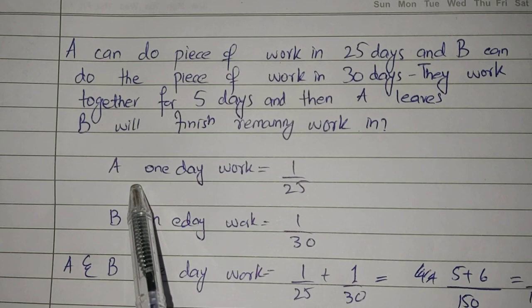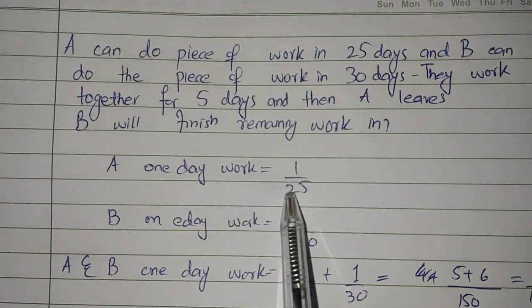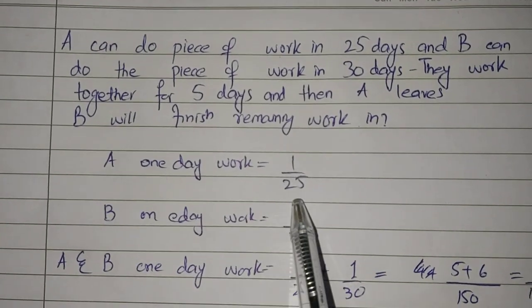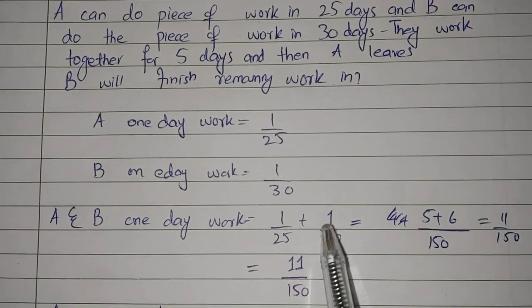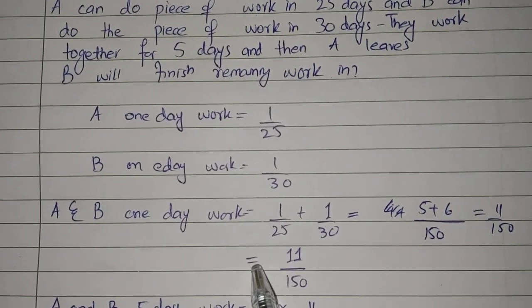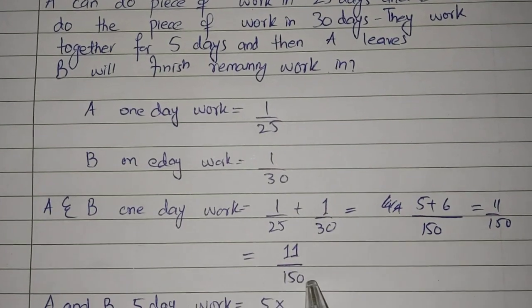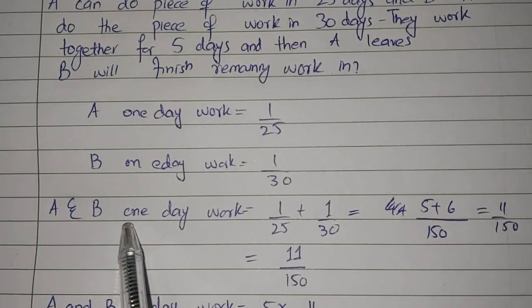A's one day work is 1/25. B's one day work is 1/30. Total will be 1/25 plus 1/30 equals 11/150. This is one day work for both A and B together.